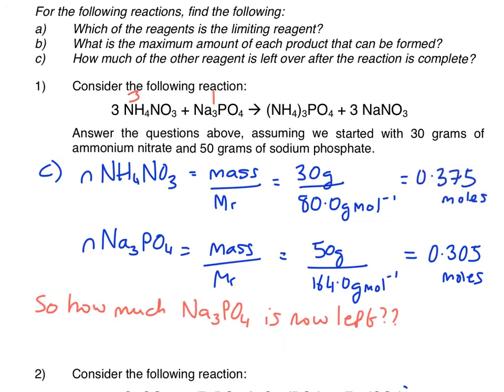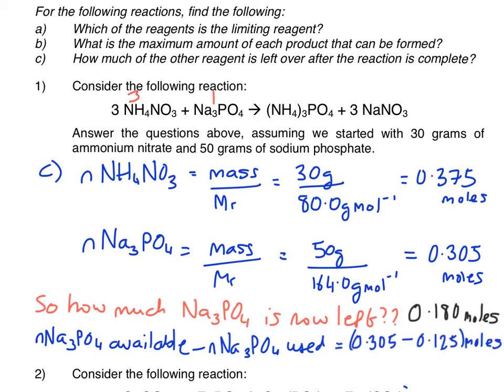Which actually now means that 0.375 moles of ammonium nitrate will react completely with 0.125 moles of sodium phosphate, which leads us on to working out how much sodium phosphate is left. Well, what we need to do is take how much we actually have and subtract from that the amount we actually reacted, which gives us 0.180 moles.